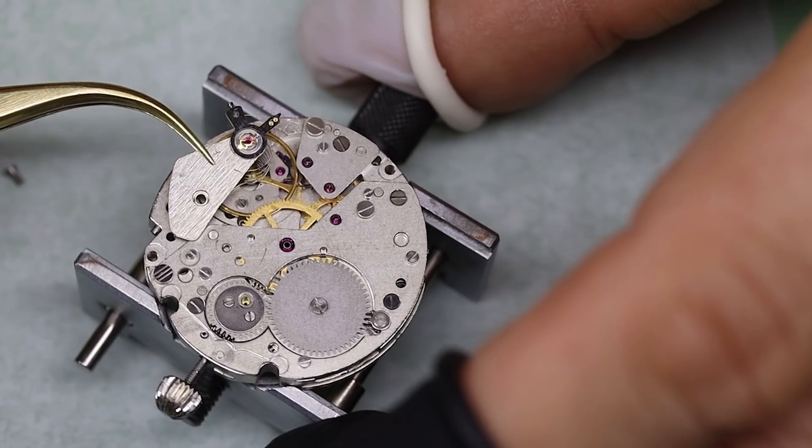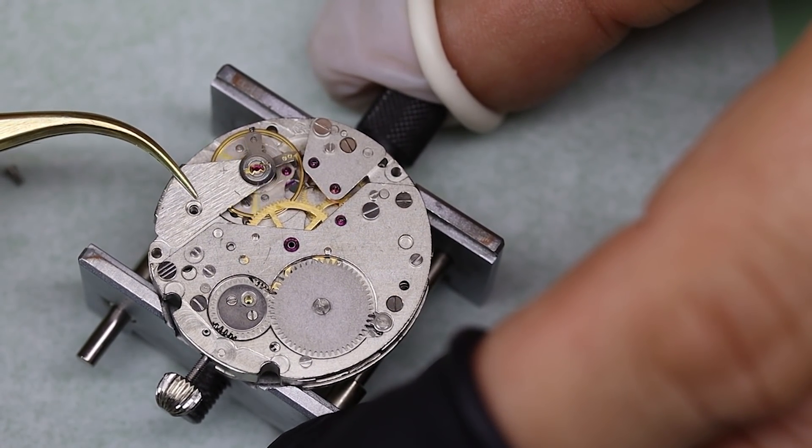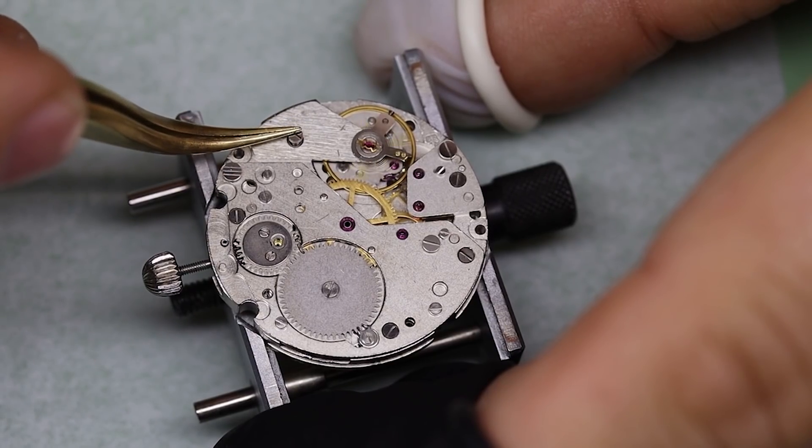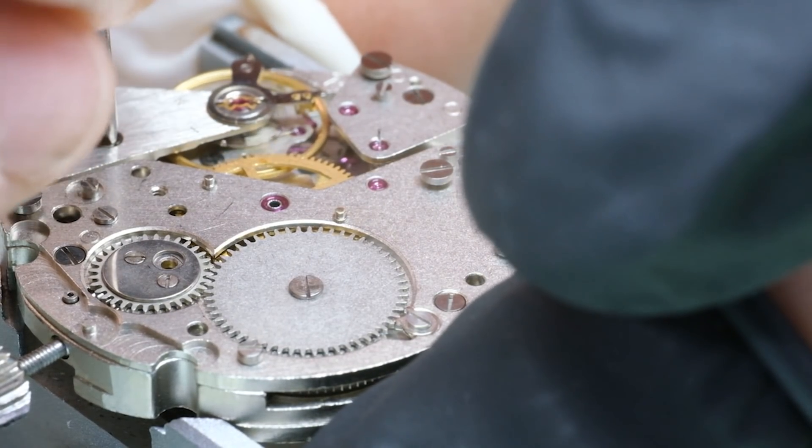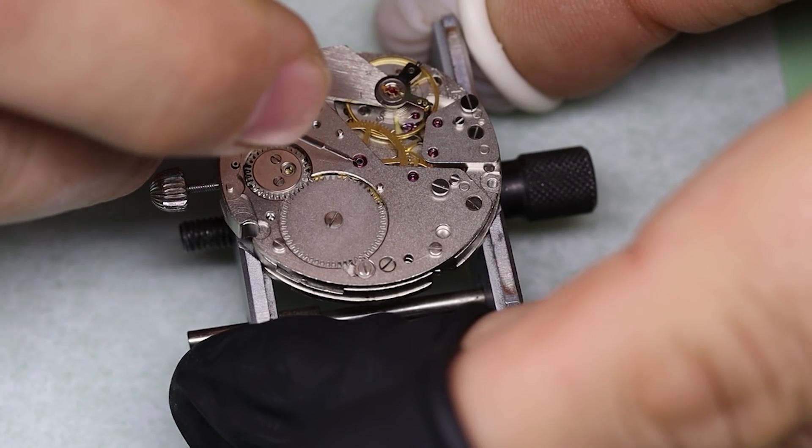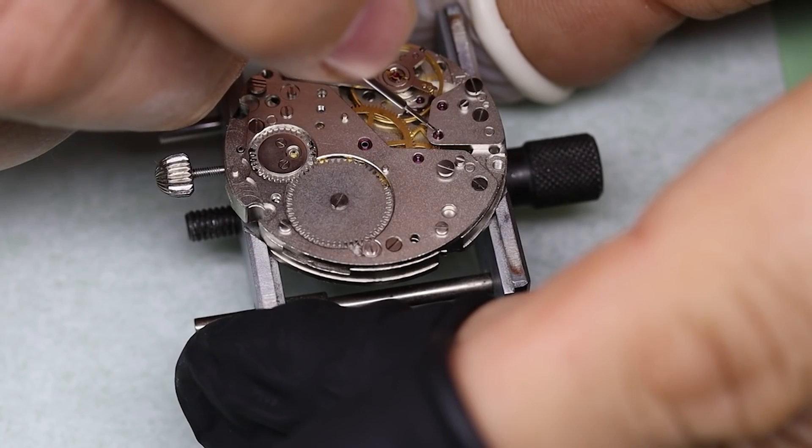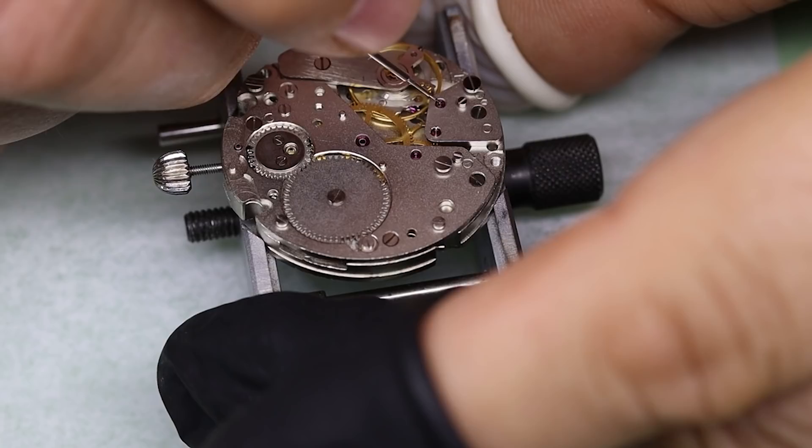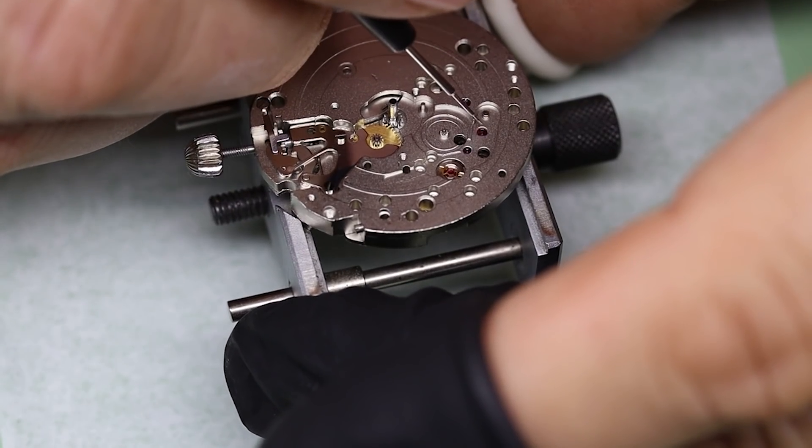All right, moment of truth. Is it cake? And that looks just fine. Okay, let's put a little bit of oil into the jewel holes. Put the HP 1300 or D5 in the center wheel and the third wheel, and then 9010 on the rest.